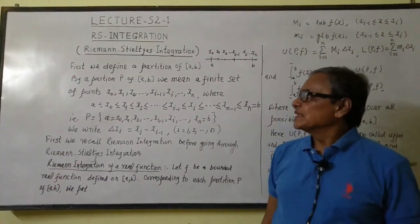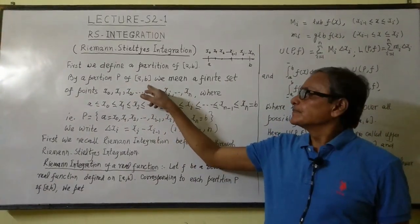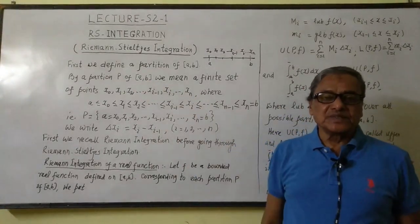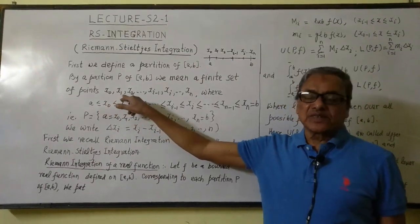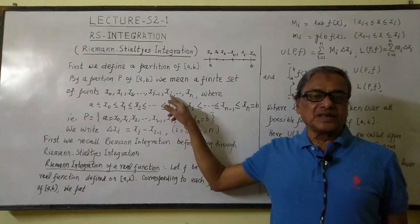For this we consider the partition P of closed interval [a,b]. By partition P of closed interval [a,b] means the set of points x0, x1, x2, xi-1, xi, up to xn.